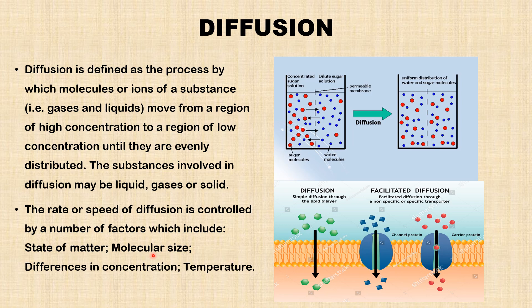Molecular size also affects the rate of diffusion. If a substance is in powdered form, it will spread faster than when the substance is in pellet form — smaller molecular size diffuses faster than larger molecular size. Regarding differences in concentration: if the difference in concentration between two points is very high, it will take longer for molecules to diffuse throughout the space than when the concentration difference is low. When concentration difference is low, the substance diffuses quickly and equilibrium is reached faster.